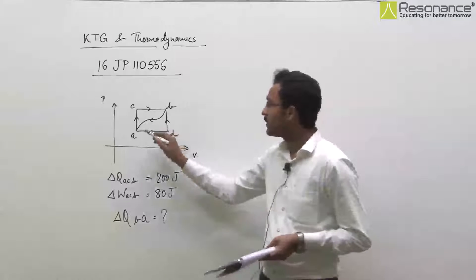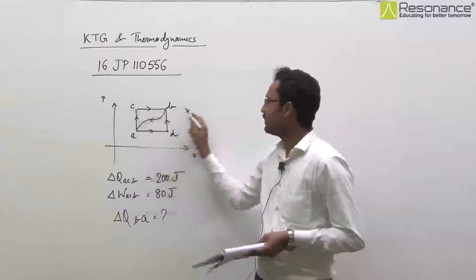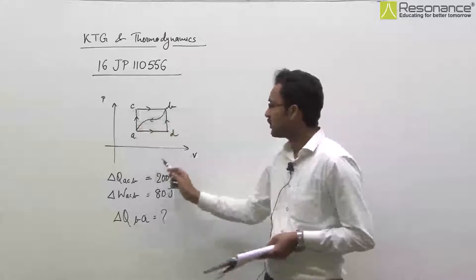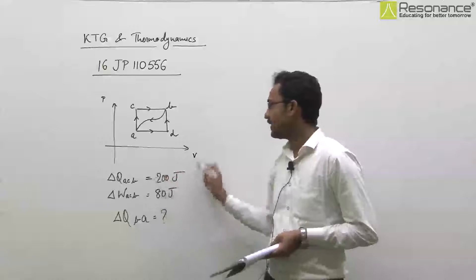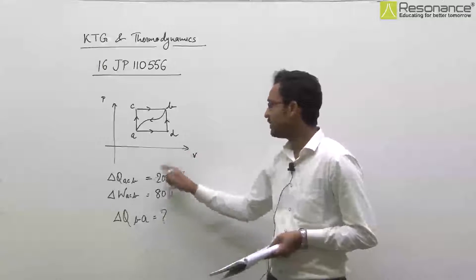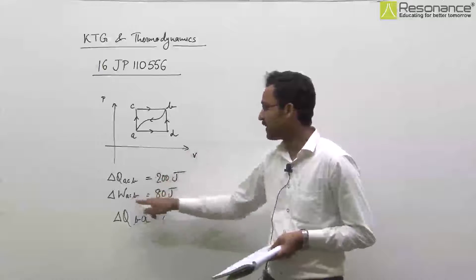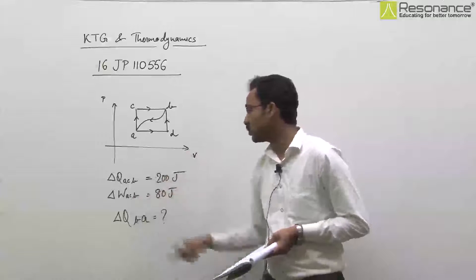In this question, an ACB process through a gas ko laya gaya hai, ACB per. So, heat absorbed by the gas is 200 joule and work done by the gas is 80 joule is given.